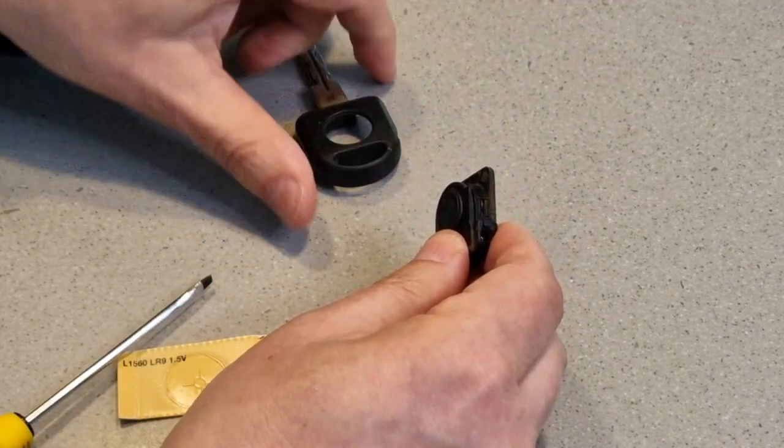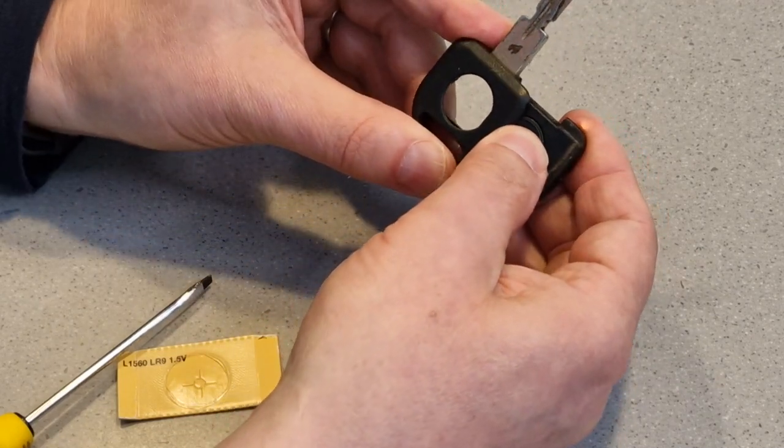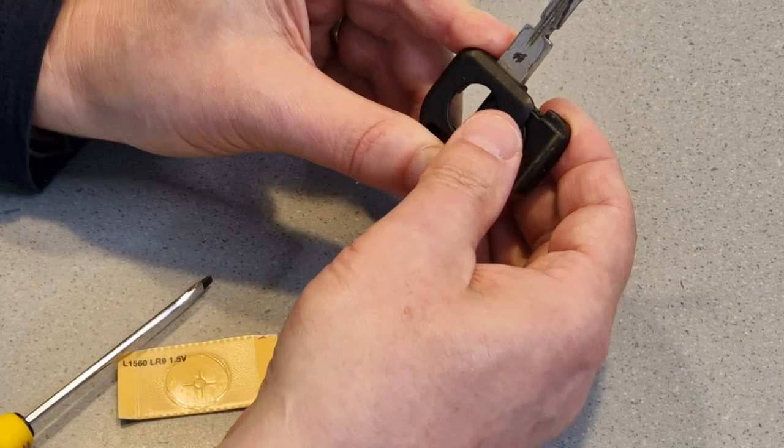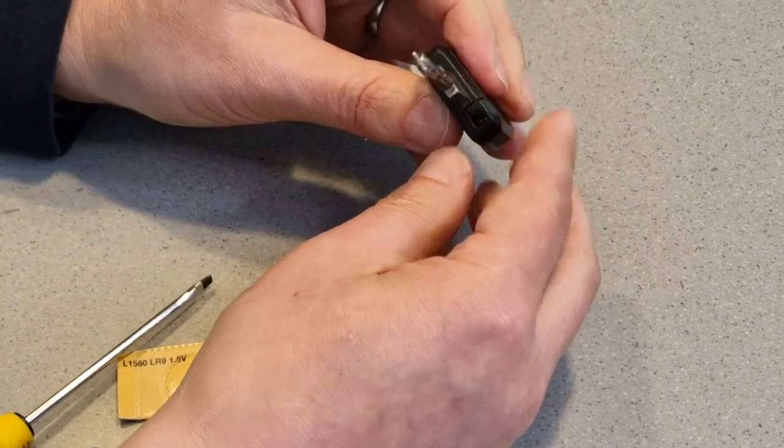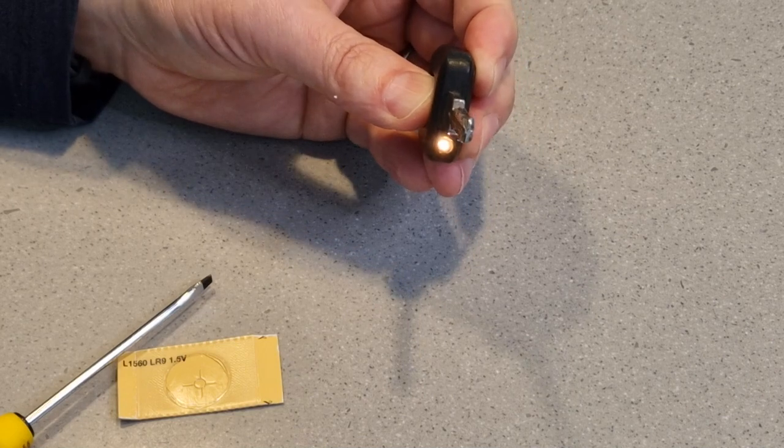And then getting your key and to reinsert it into the key again, you press in the logo like you did before and just hold against the pressure and slot it in. And there we have our working 90s BMW key.